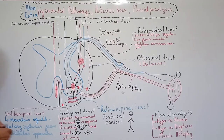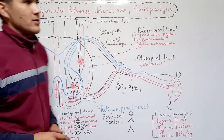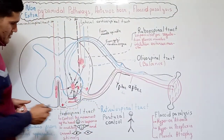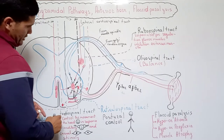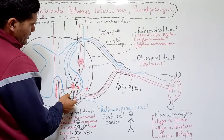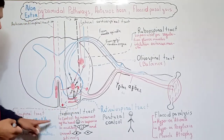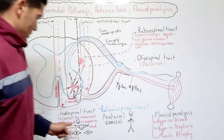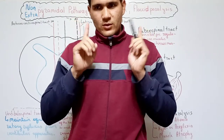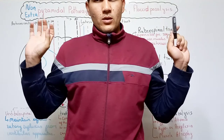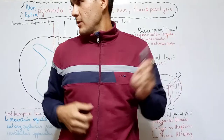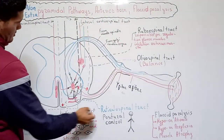The next tract is the tectospinal tract. There is a structure called the tectum, located in our brainstem, and from the tectum the tectospinal tract is initiated. It connects with alpha motor neurons via interneurons. The main function is controlling the movement of your head according to visual and auditory stimuli — for example, when you hear music from the right side, you turn your head to the right.